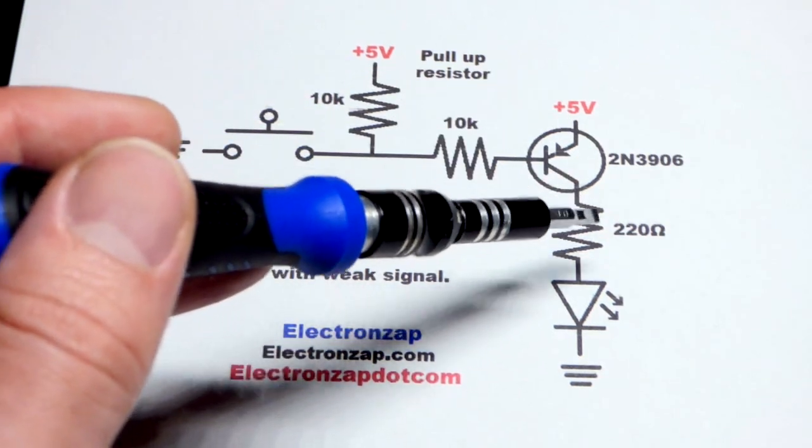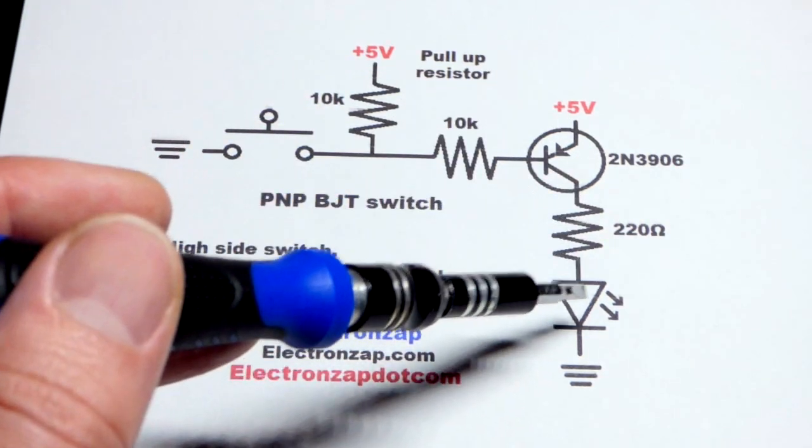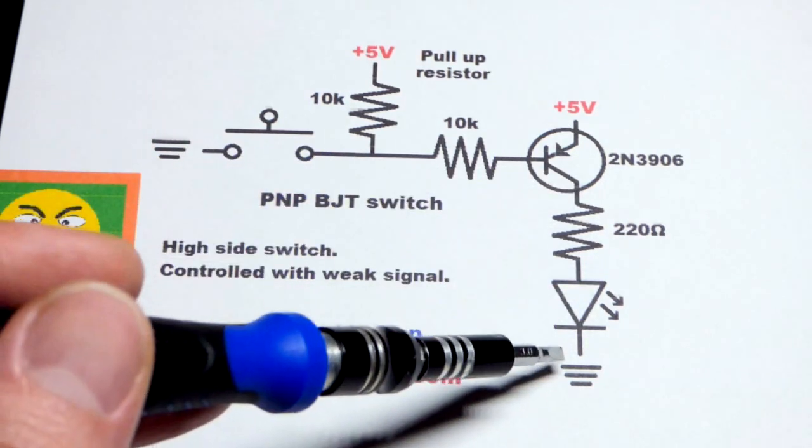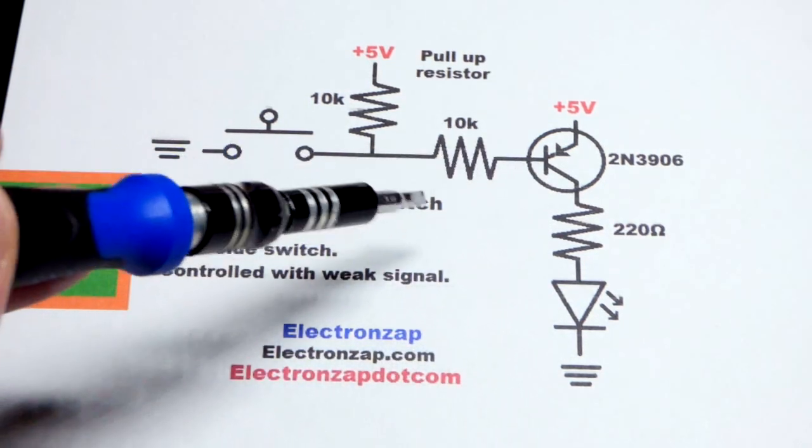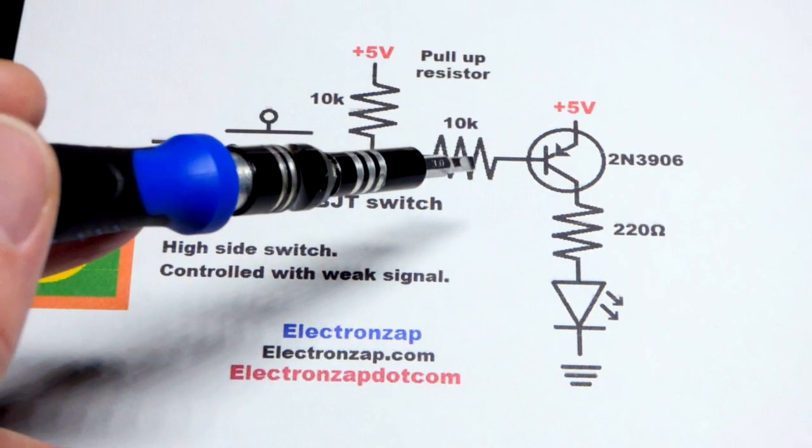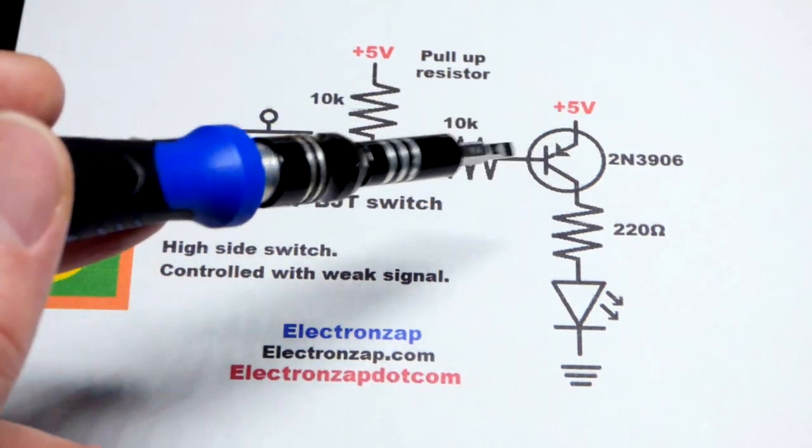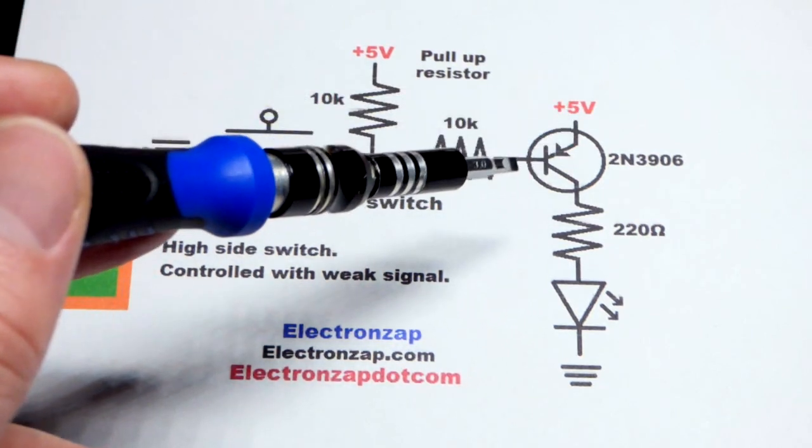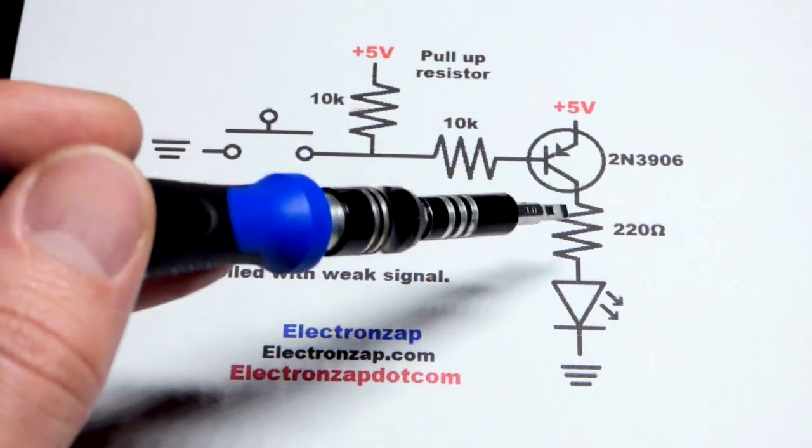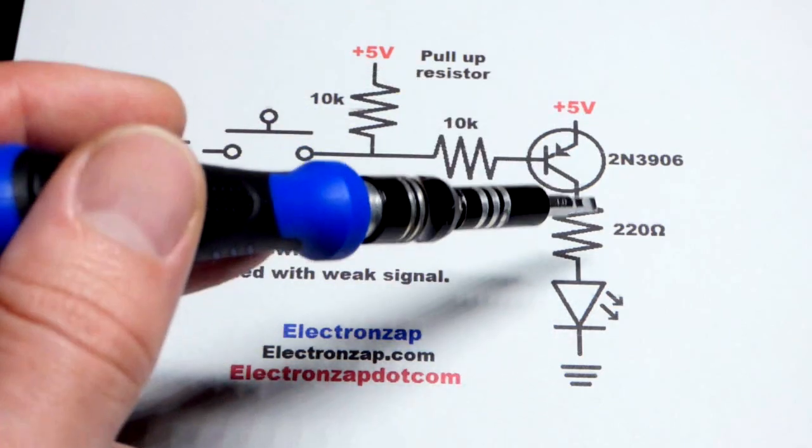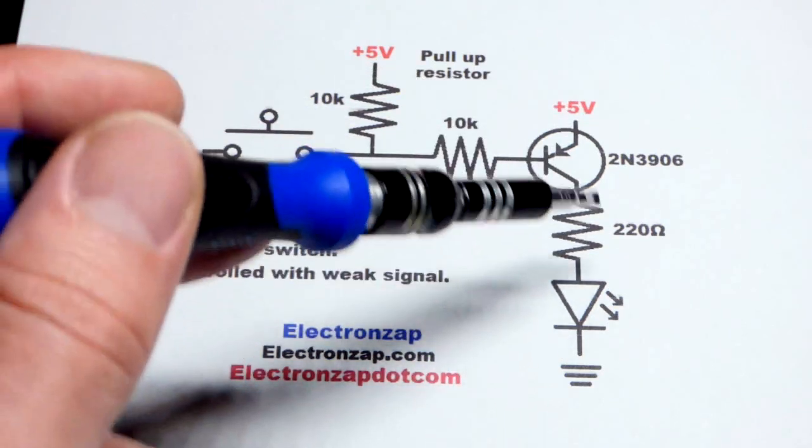But we have a 220 ohm resistor and LED limiting current below 20 milliamps. The main thing is we're saturating it. We're putting enough base to emitter, or emitter to base current I should say, through the transistor to allow much more current to flow through than what the load needs.